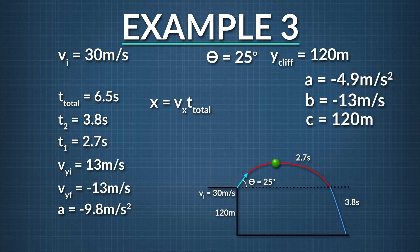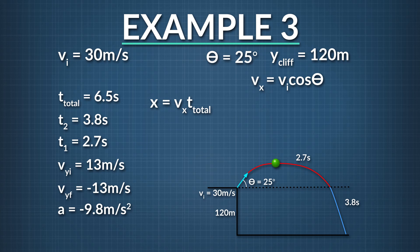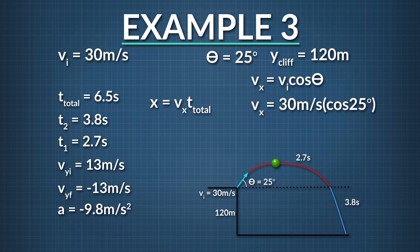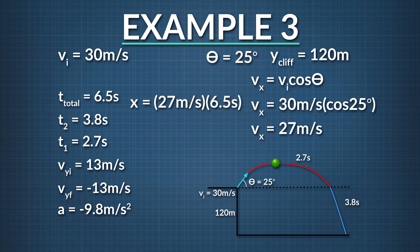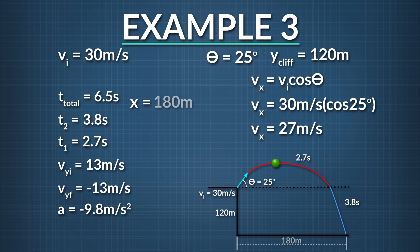The range the ball traveled equals its horizontal velocity v sub x times the total time it is in the air. We know t total, but need to solve for the velocity in the x-direction. V sub x equals the initial velocity v sub i times the cosine of the initial launch angle theta. V sub i is 30 meters per second and theta is 25 degrees. Plugging those numbers in, we find v sub x is 27 meters per second. So the range — the total horizontal distance the ball traveled from launch to landing — is 27 meters per second times 6.5 seconds, which is 175.5 meters, or to two significant figures, 180 meters.